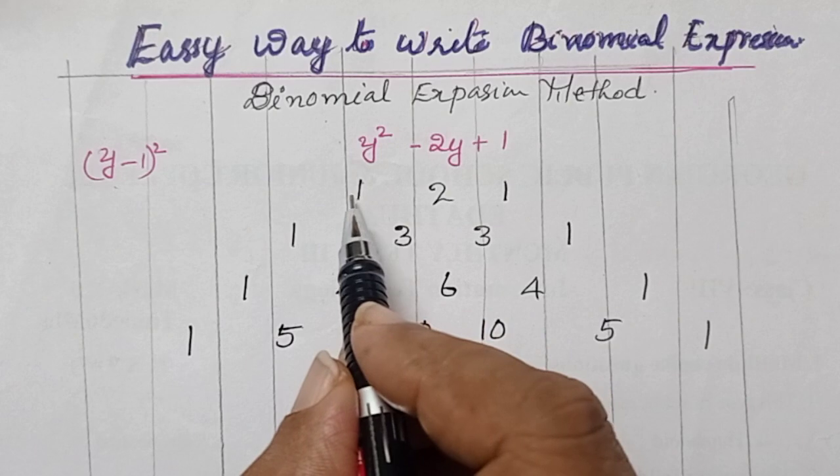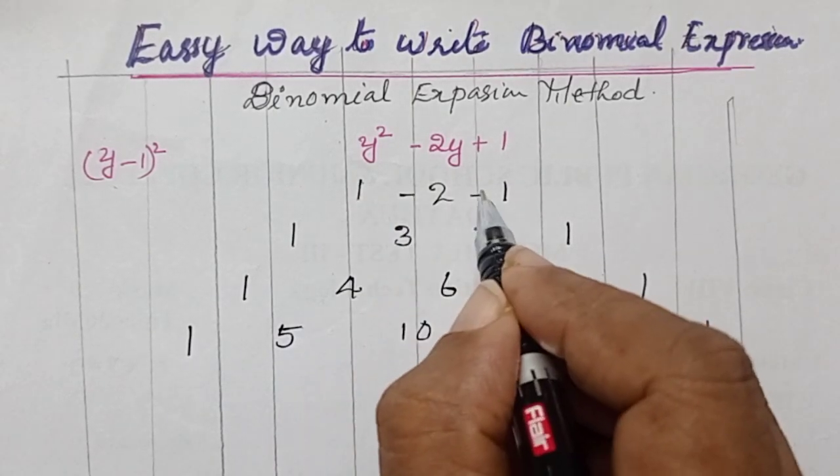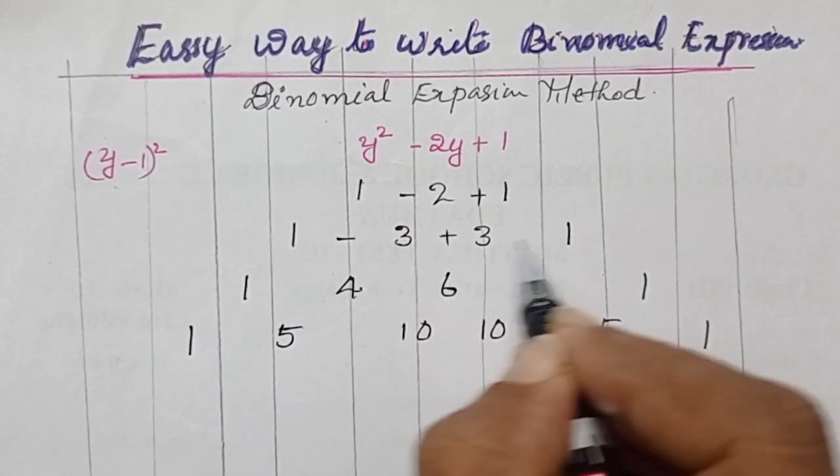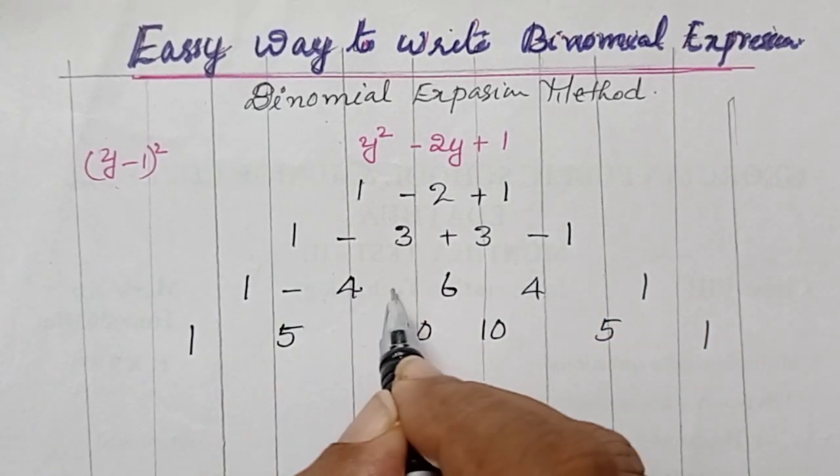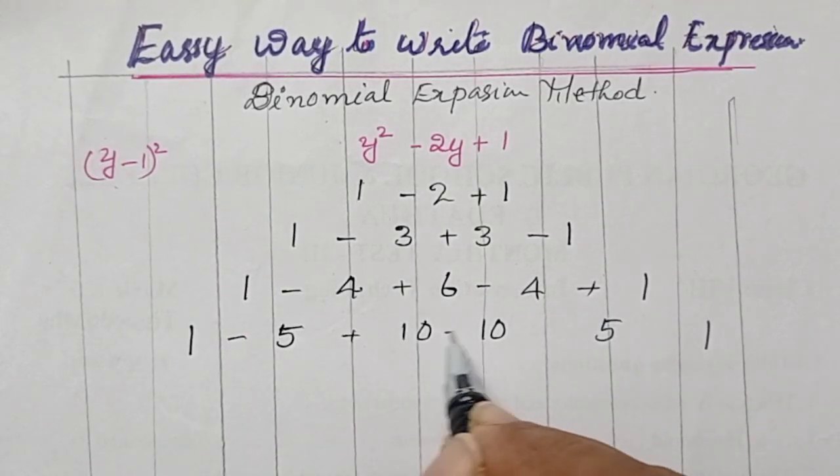After that, first term is positive. Second one is negative, positive. Then alternating: negative, positive, negative, positive, negative, positive, negative.